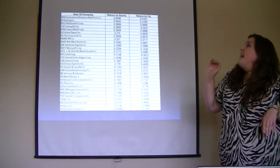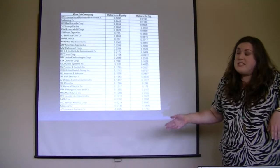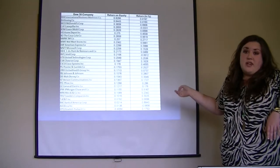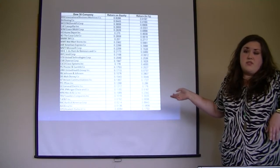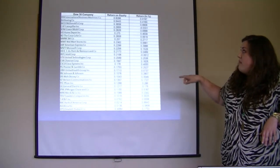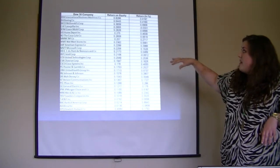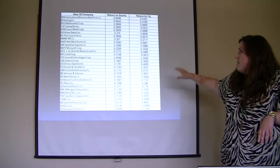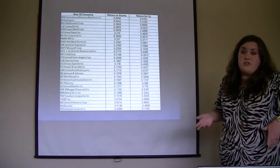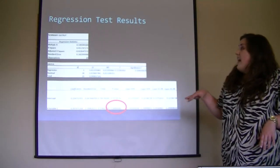I listed out all the Dow 30 companies, their return on equity pulled from Yahoo Finance, and also the 52-week change in percentage return for each company. I then sorted the return on equity from highest to lowest, and you can see that when sorted, it also sorted the return percentage for each company as well. Then I ran our regression test.